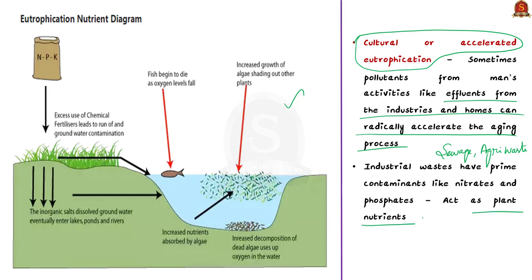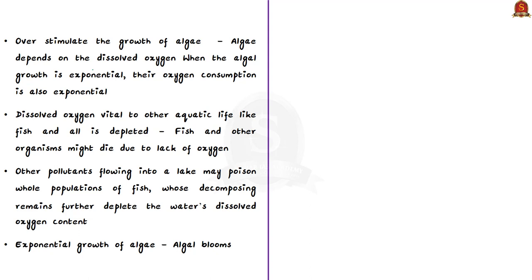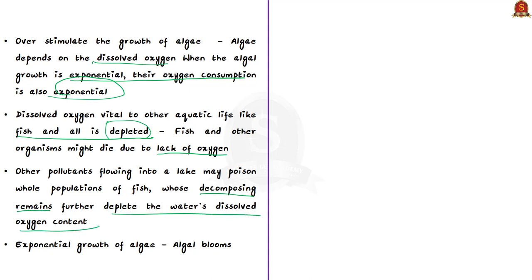Algae depend on dissolved oxygen. When algal growth is exponential, their oxygen consumption is also exponential, depleting the dissolved oxygen vital to other aquatic life like fish. Fish and other organisms may die due to lack of oxygen. Other pollutants may poison whole fish populations, and decomposing remains further deplete dissolved oxygen content — causing a lake to literally choke to death. This is accelerated eutrophication.